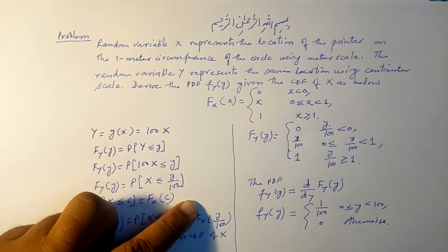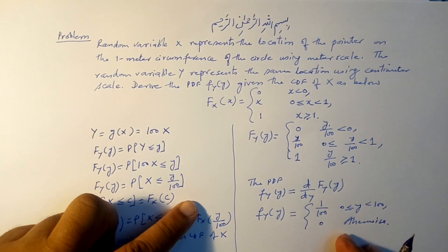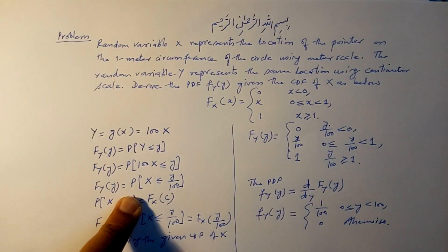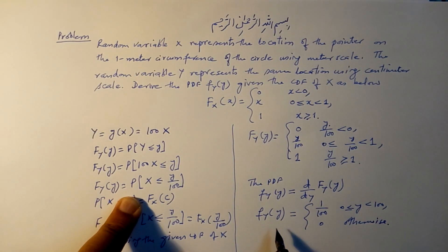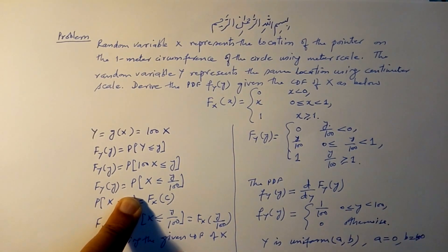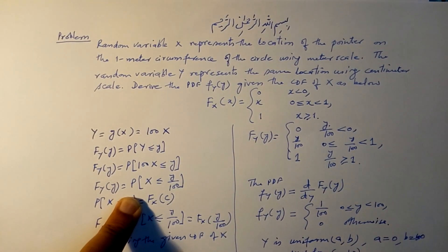We have obtained the PDF of the derived random variable Y by first deriving the CDF. We can observe that this is the representation of a uniform random variable. So Y is a uniform random variable with parameters a = 0 and b = 100, meaning Y ~ Uniform(0, 100).